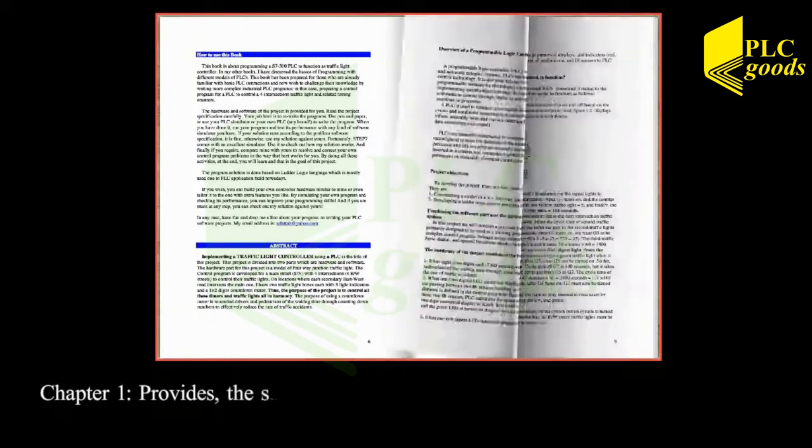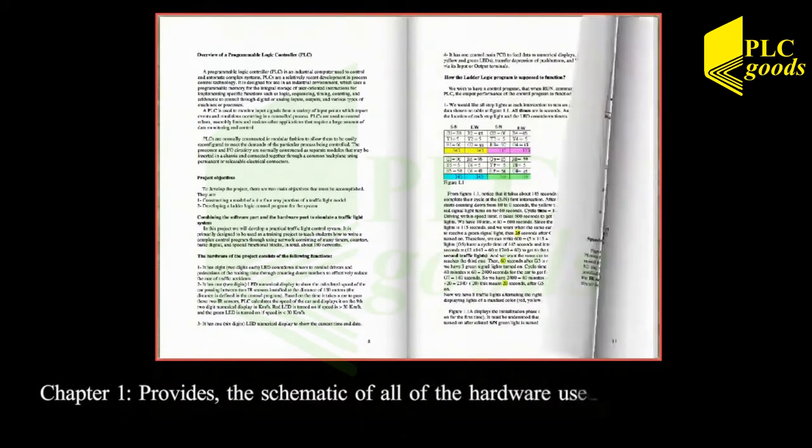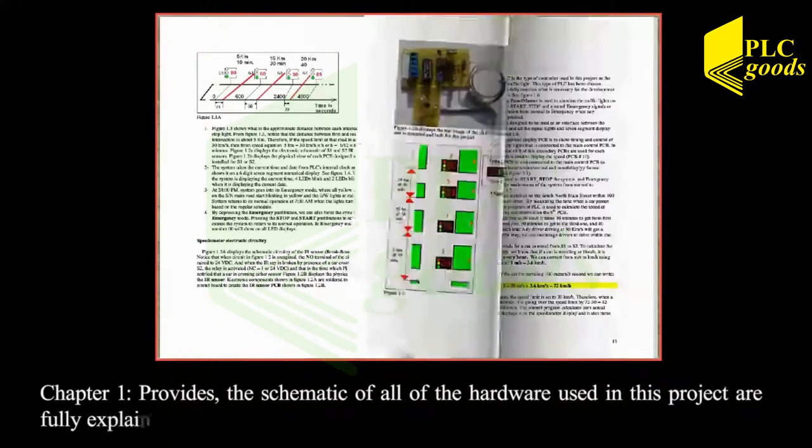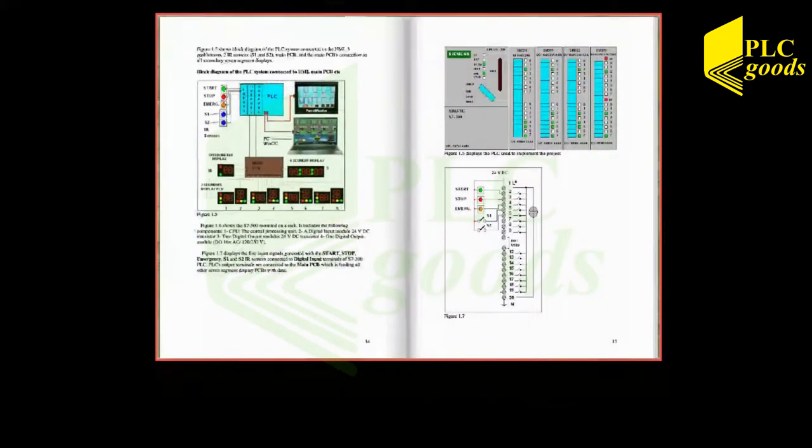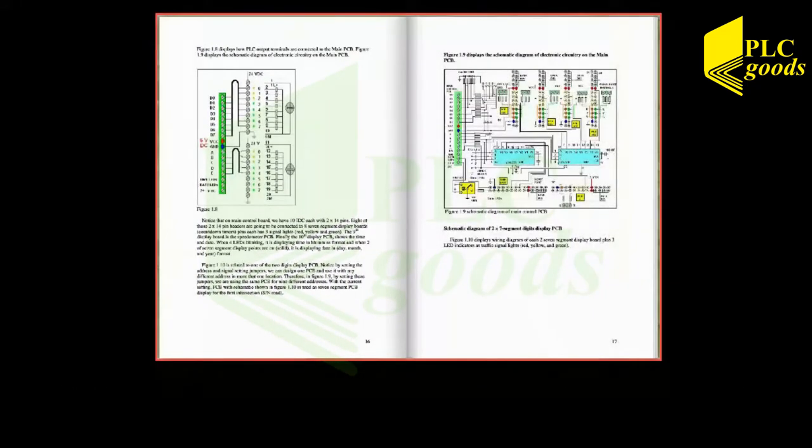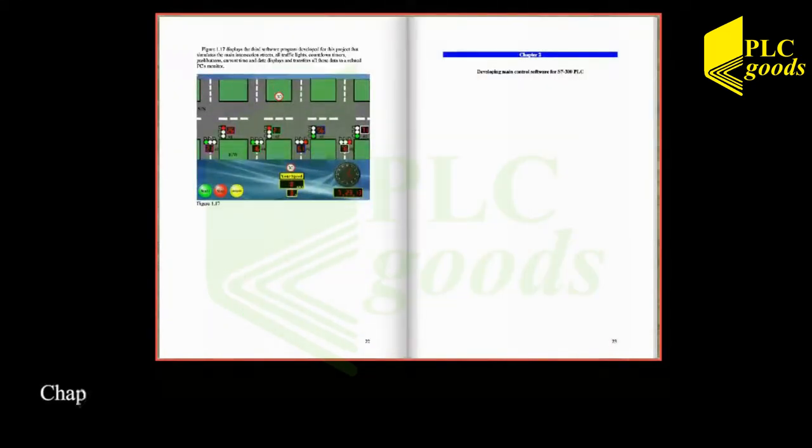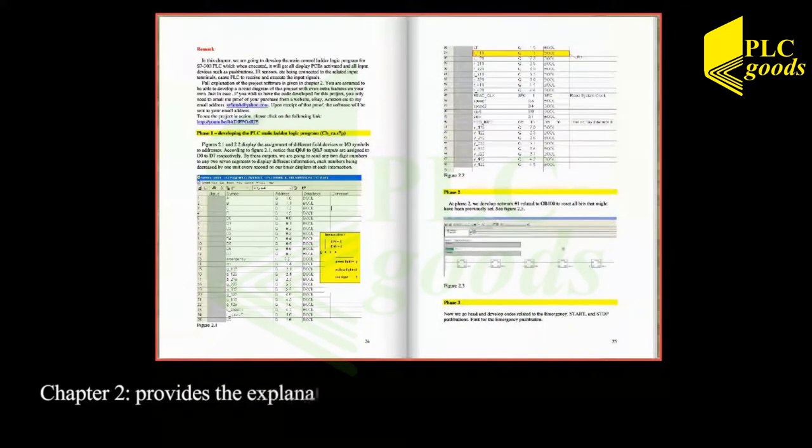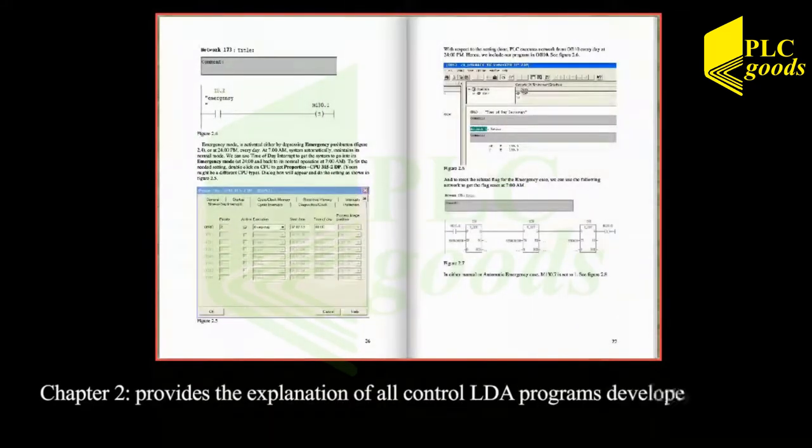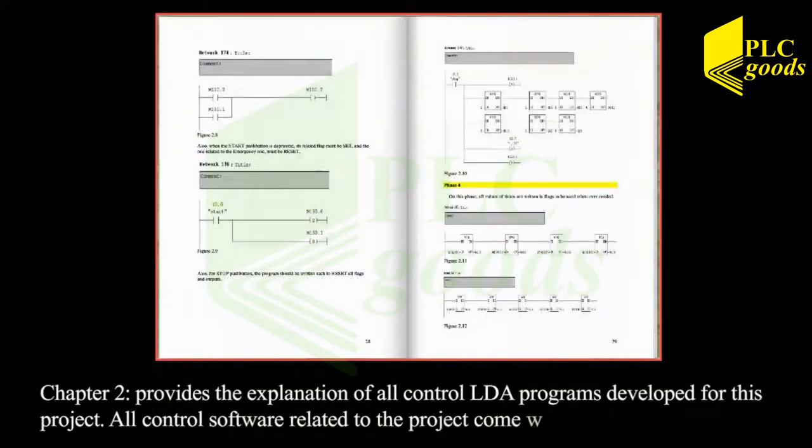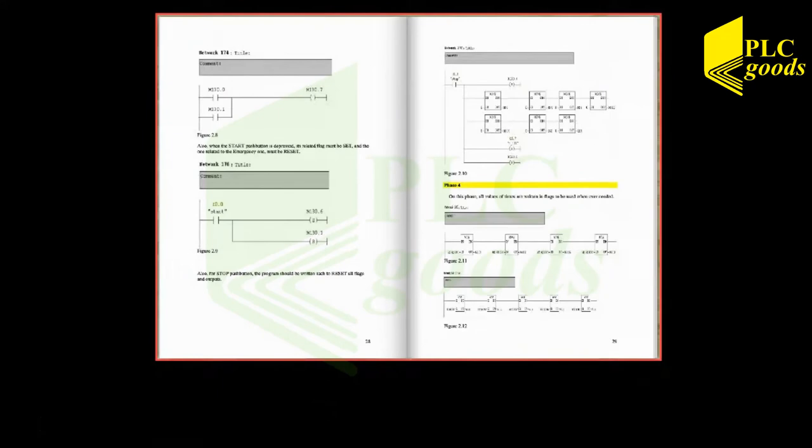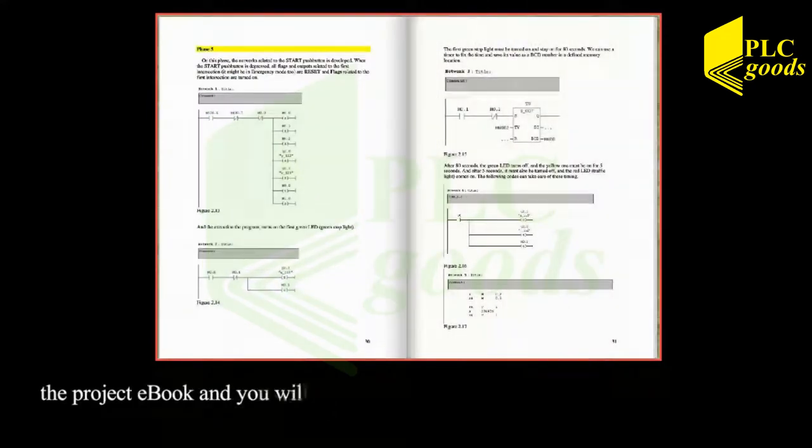Chapter 1 provides the schematic of all of the hardware used in this project and is fully explained. Chapter 2 provides the explanation of all control ladder programs developed for this project. All control software related to the project comes with the purchase of the project ebook and you will not need to develop any extra PLC control program for any part of the project.